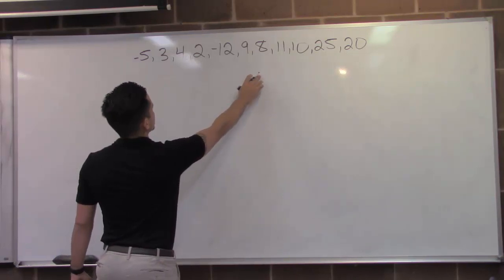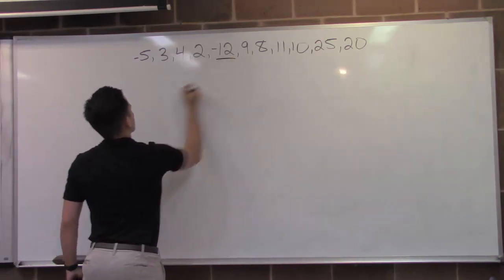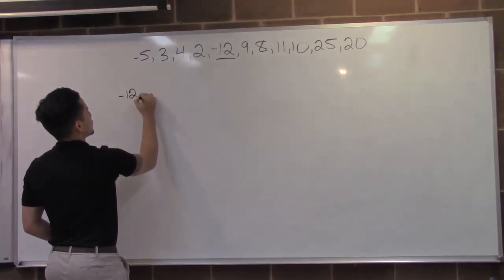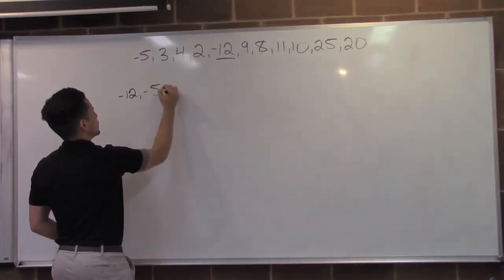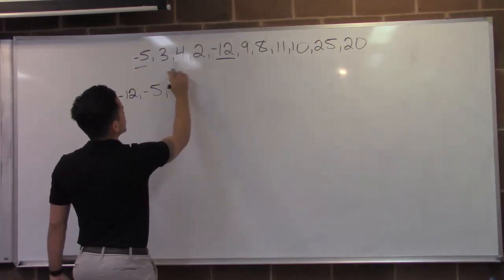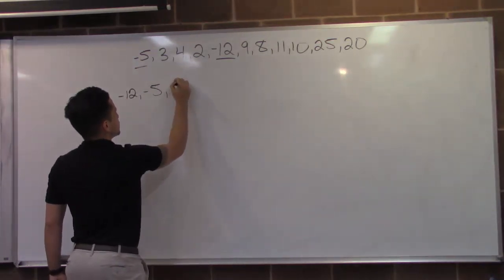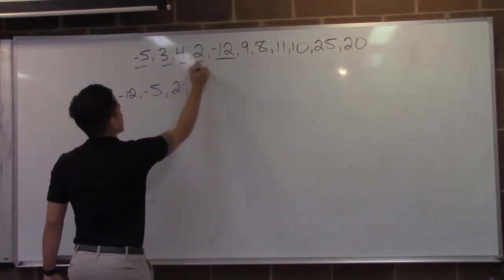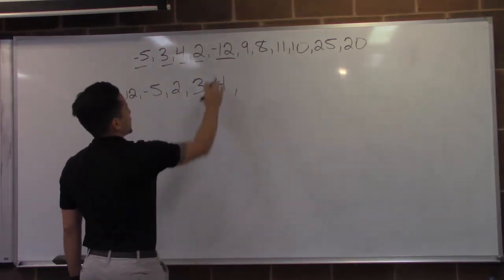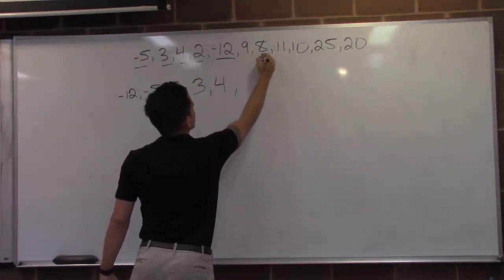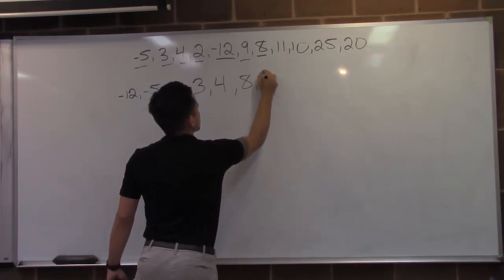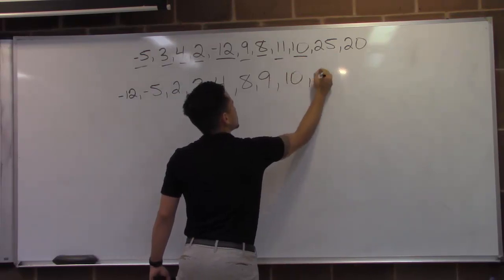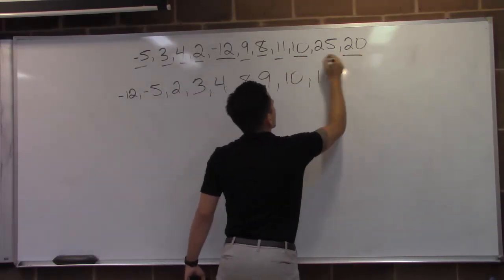I'm going to order it from least to greatest. So I look through it, I see that negative twelve is my least and follows negative five, then two, three, then four, then I have eight, nine, ten, eleven, twenty, and twenty-five.